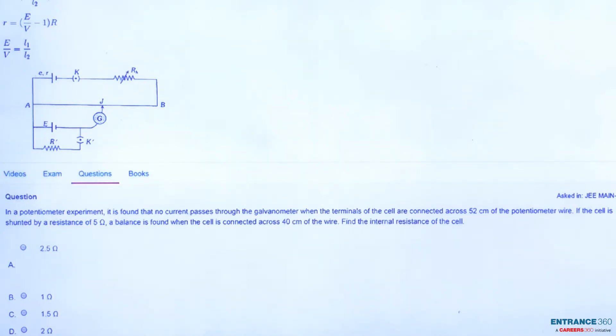In a potentiometer experiment it is found that no current is passing through the galvanometer when terminals of cells are connected across 52 cm of potentiometer wire. That is, we obtain null point at 52 cm. If the cell is shunted by 5 ohm resistance, the balance point is found at 40 cm.